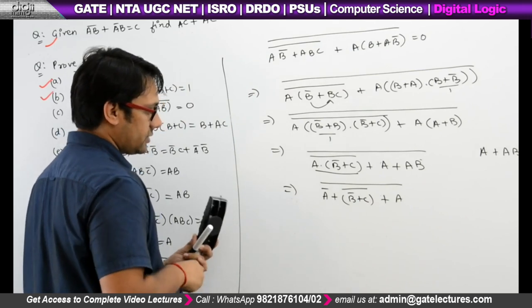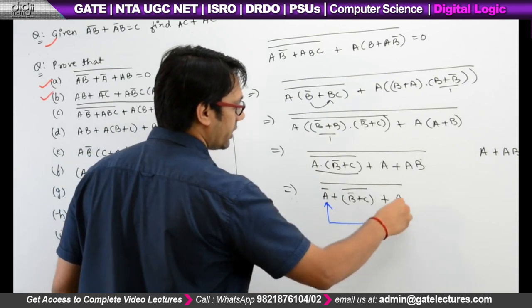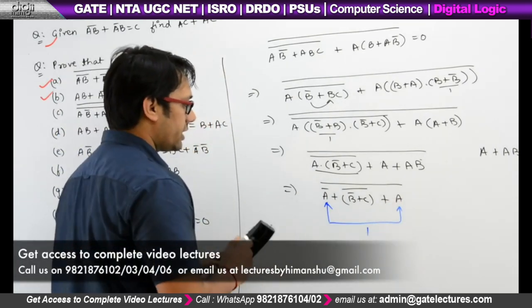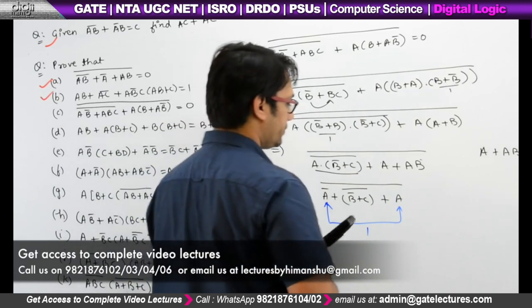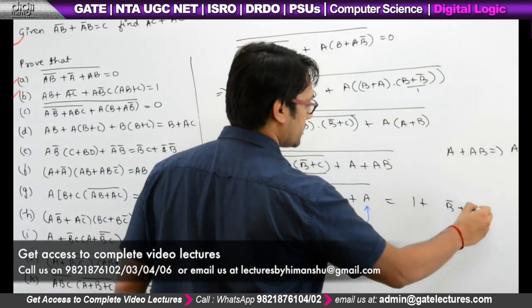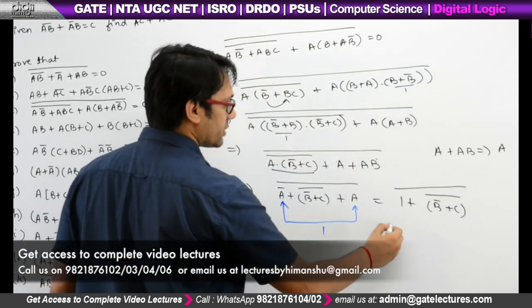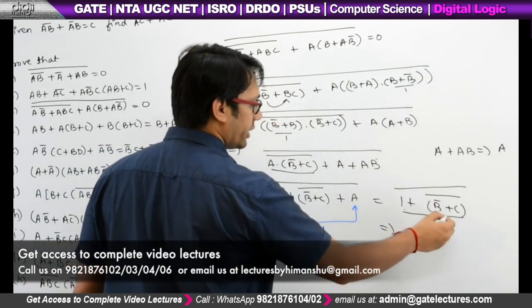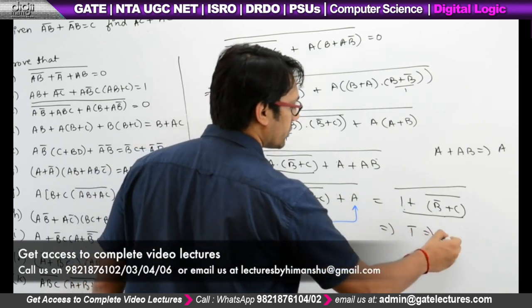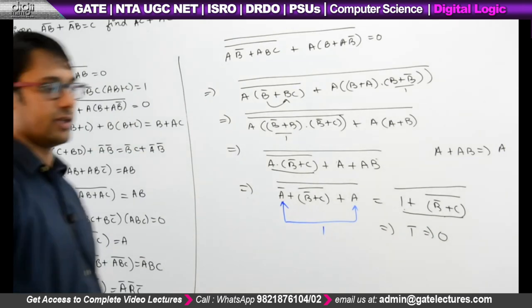Further simplification: we have A' + A, so you can write 1 here. So this becomes (1 + B' + C)' whole complement, with A' + A giving 1. Applying De Morgan's law, A' + B' + C complement plus A complement. Since A' + A = 1, this becomes (1 + B' + C)' = 1, and 1 complement = 0. So left hand side equals right hand side, hence proved.